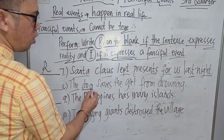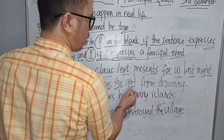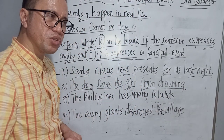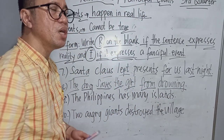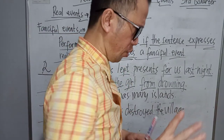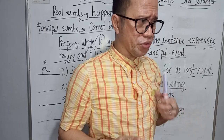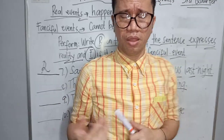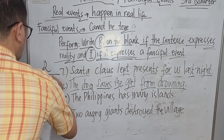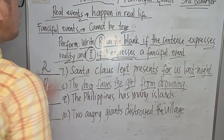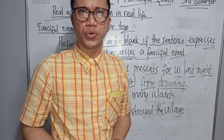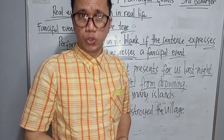Number eight: The dog saves the girl from drowning. We know the story that dogs are man's best friend, and there are real stories where something like this has happened. So this is letter R, or real events, because it happens in real life and is based on truth.